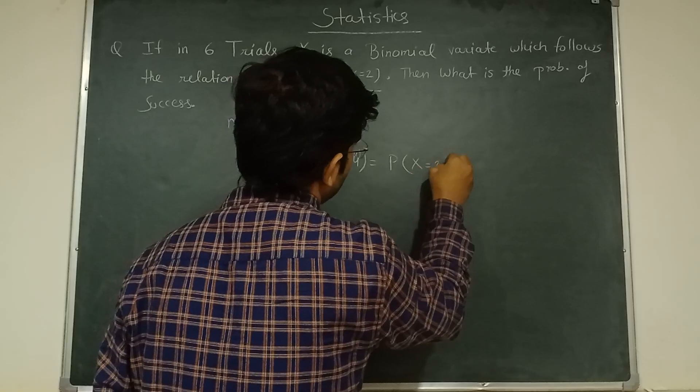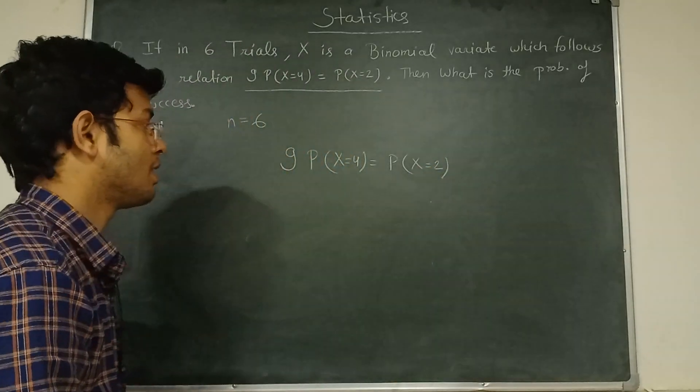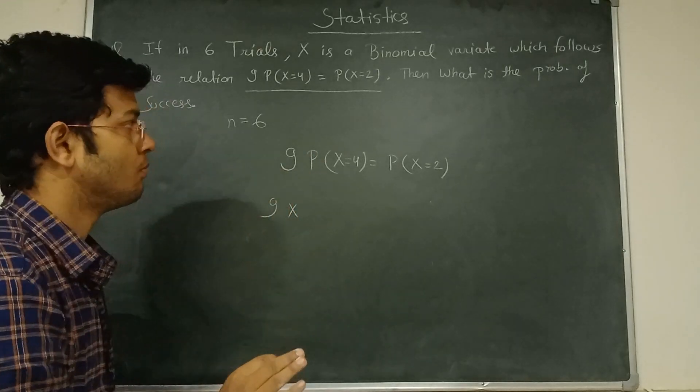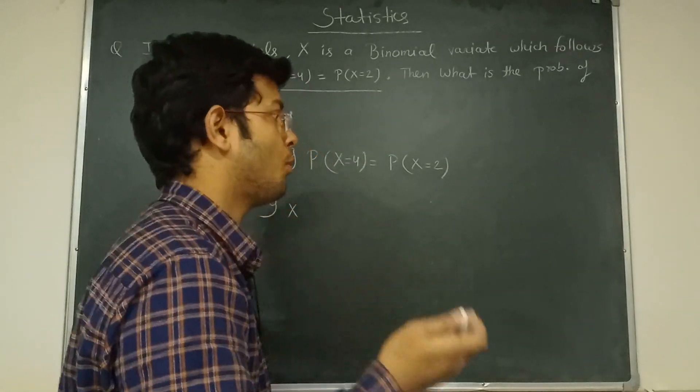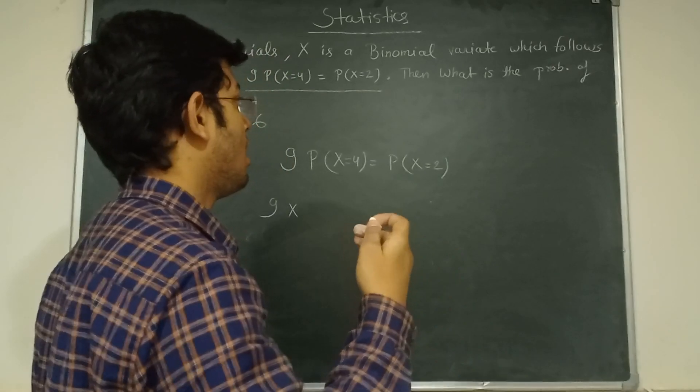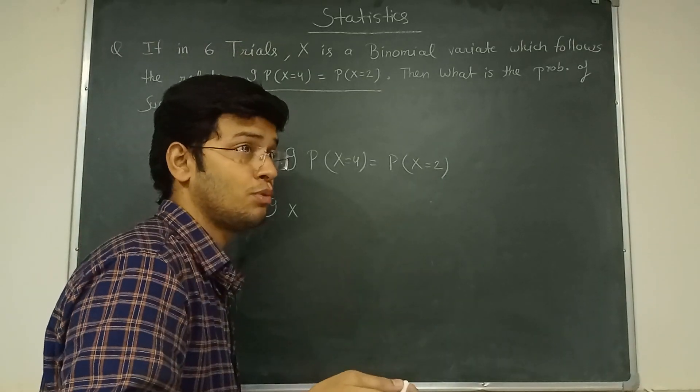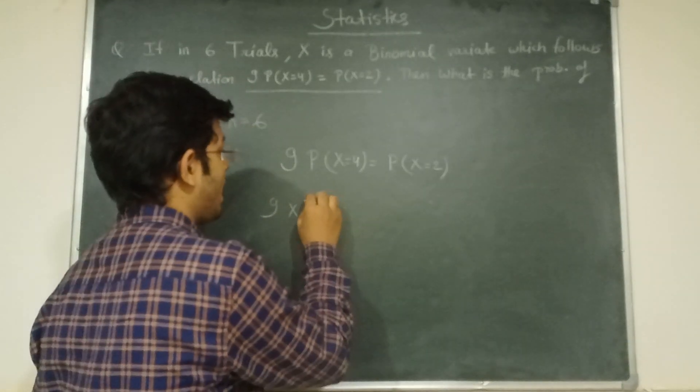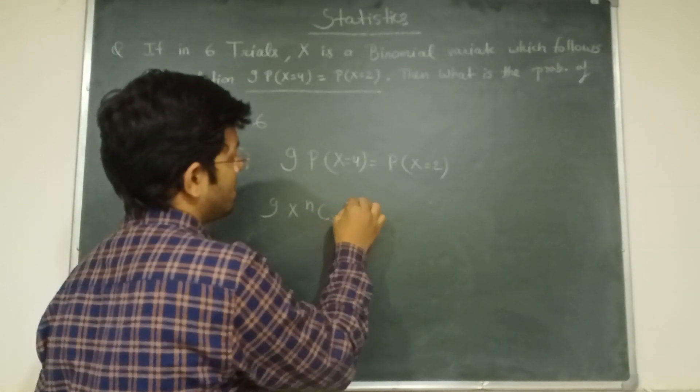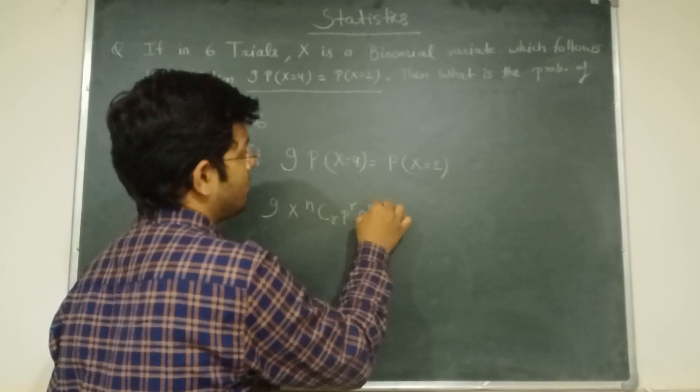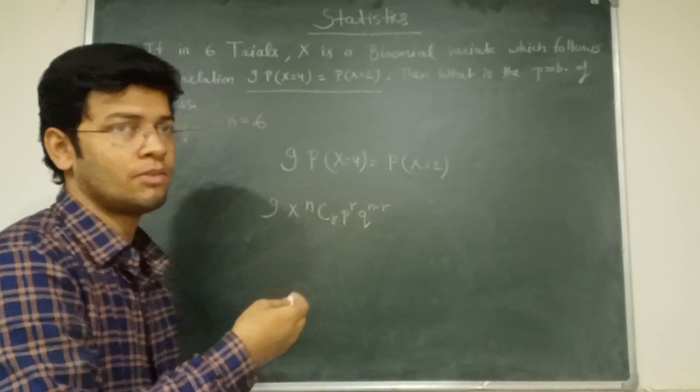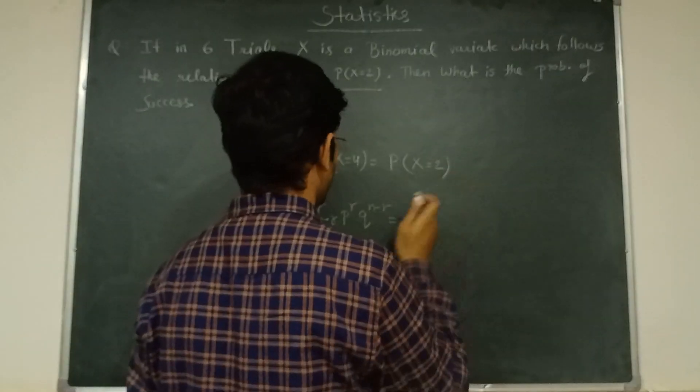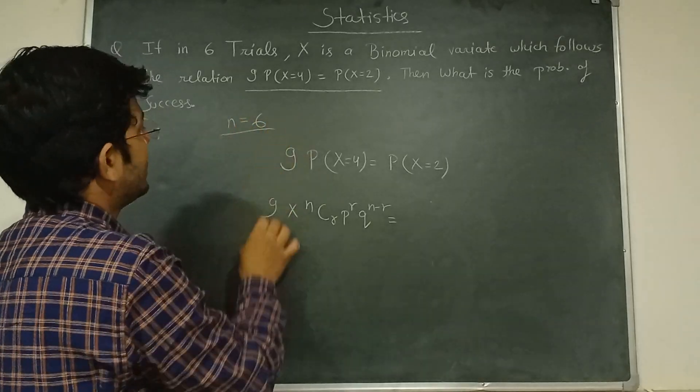9P(X=2). Now 9 is the constant term. For the binomial distribution we need to learn the binomial distribution formula: nCr × p^r × q^(n-r). This is the formula of the binomial distribution.